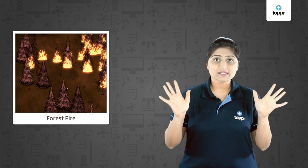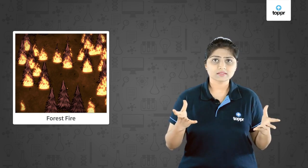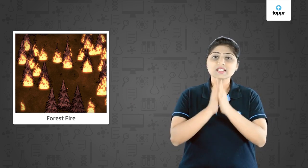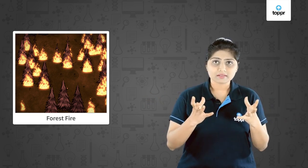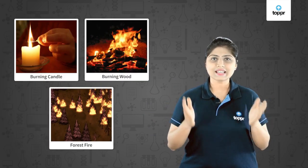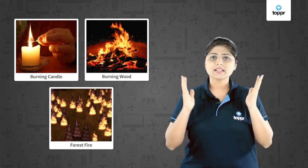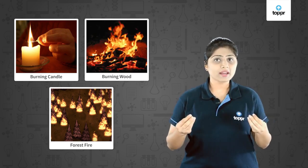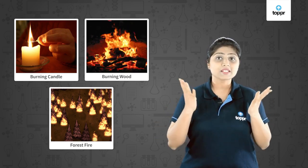Have you seen forest fires? When does a forest fire occur — does it occur in all seasons? No, it occurs when there is an extreme amount of heat in the atmosphere, due to which some grasses catch fire, and slowly from these grasses the entire forest catches fire. All these examples tell us that different substances require different amounts of heat to burn. The more heat required, the higher the temperature required for a substance to burn.